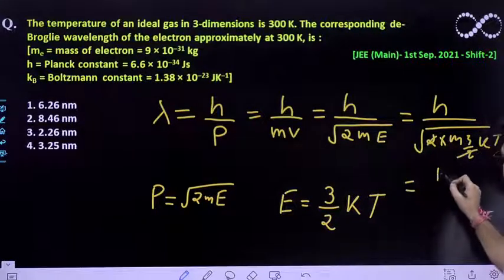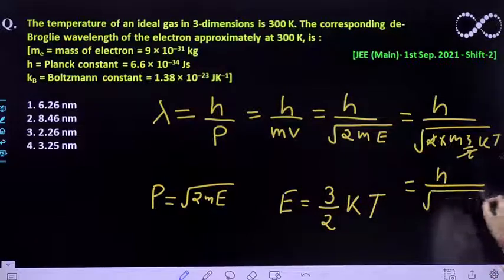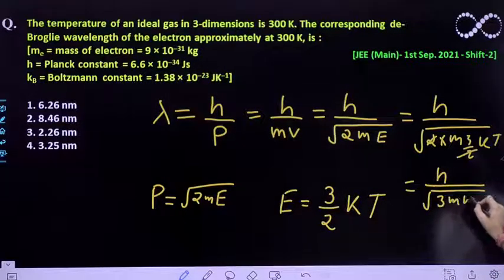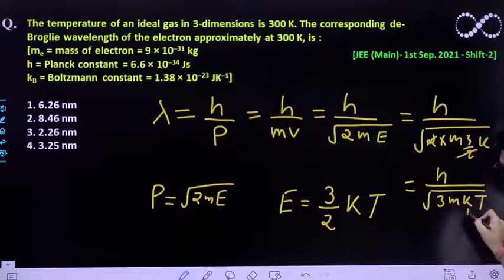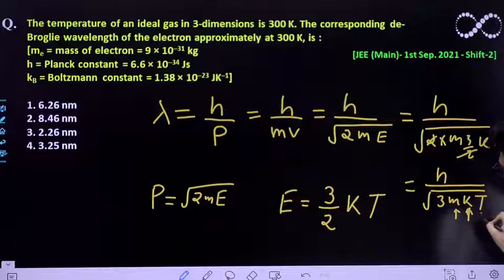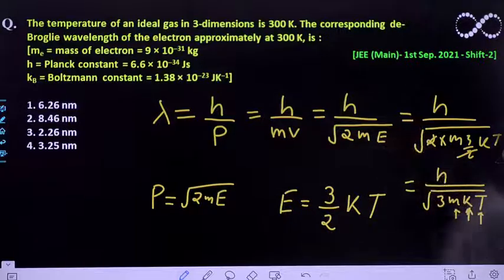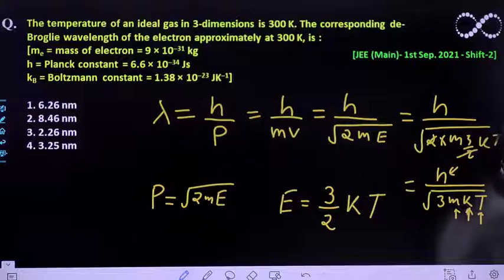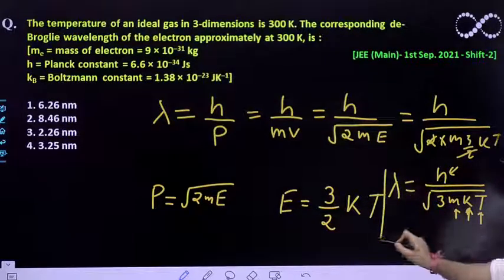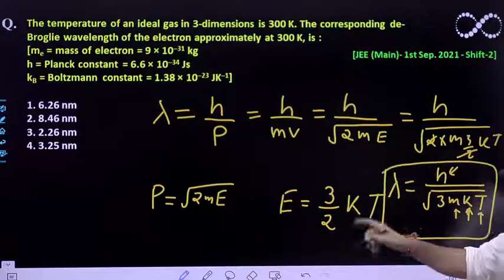The 2s cancel out each other. So eventually you will get this expression as 3mKT, where mass of electron is already given to you, Boltzmann constant is already given to you, temperature of 300 Kelvin is also given to you, Planck's constant is also given to you. So eventually you can easily find out the expression for wavelength.